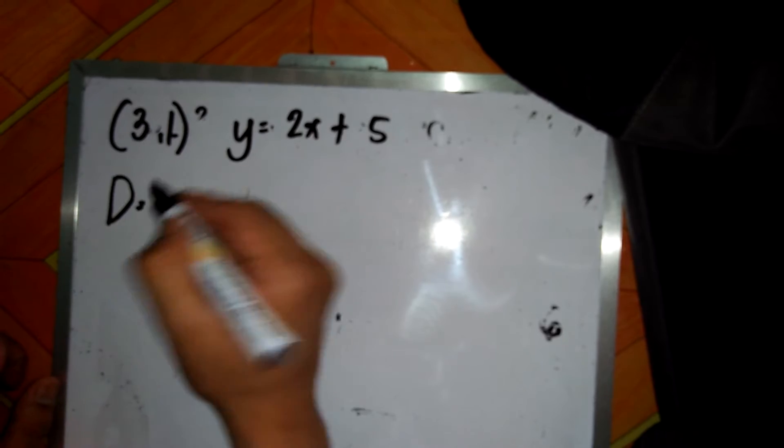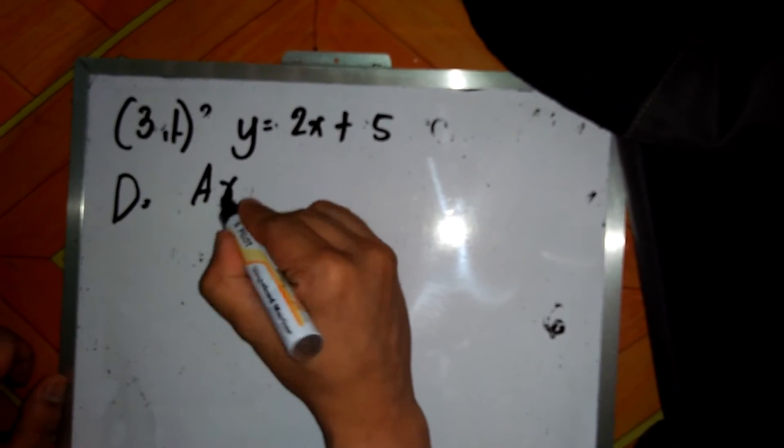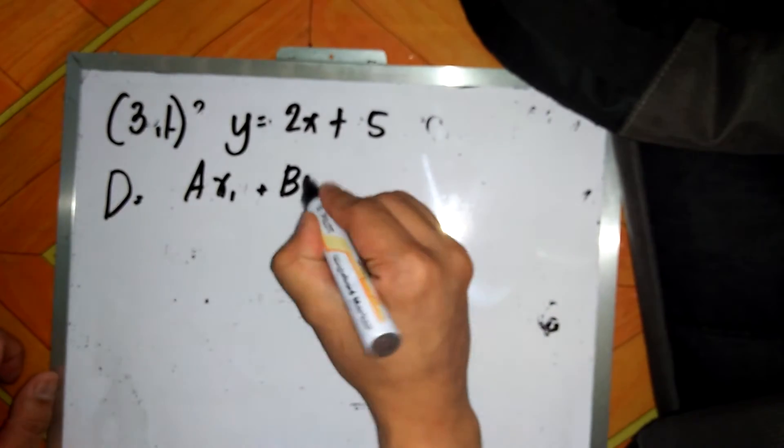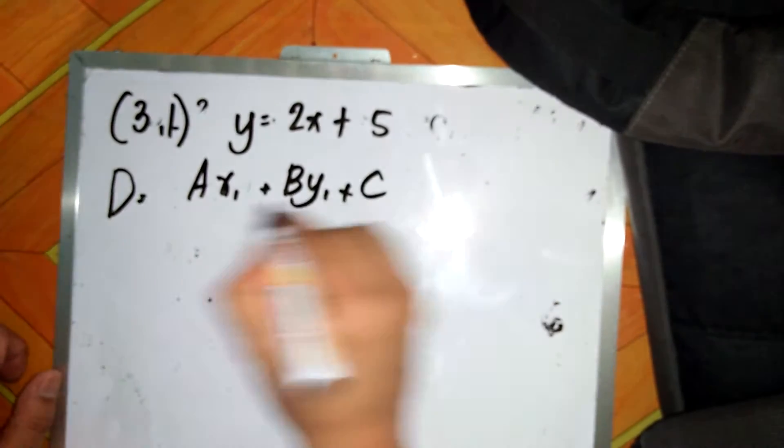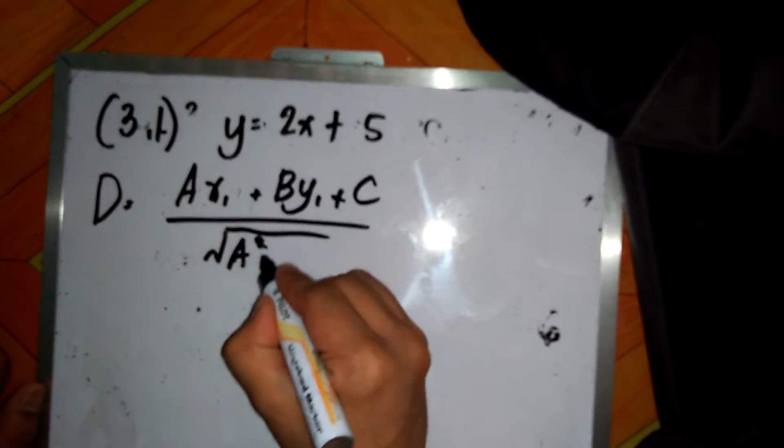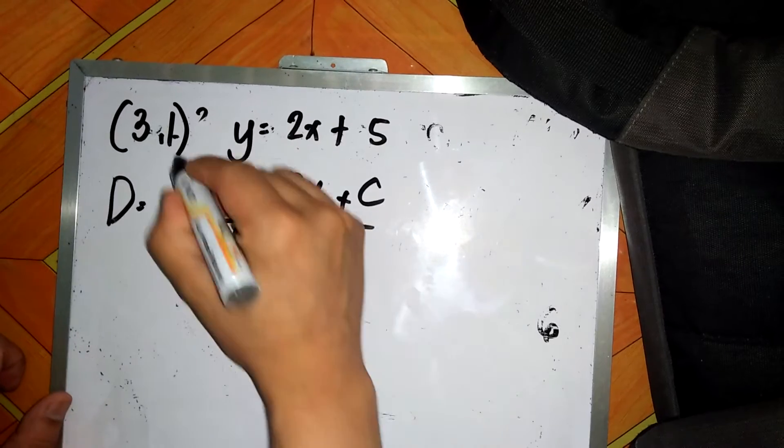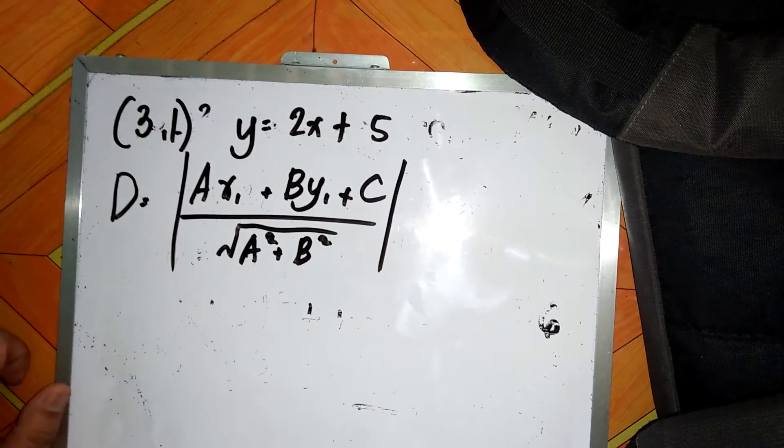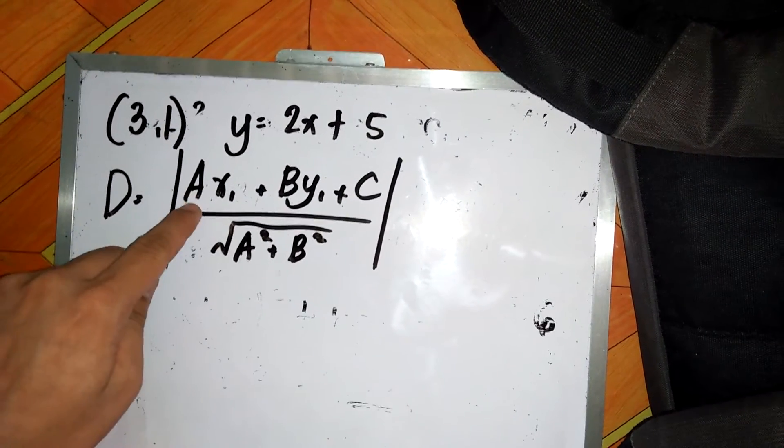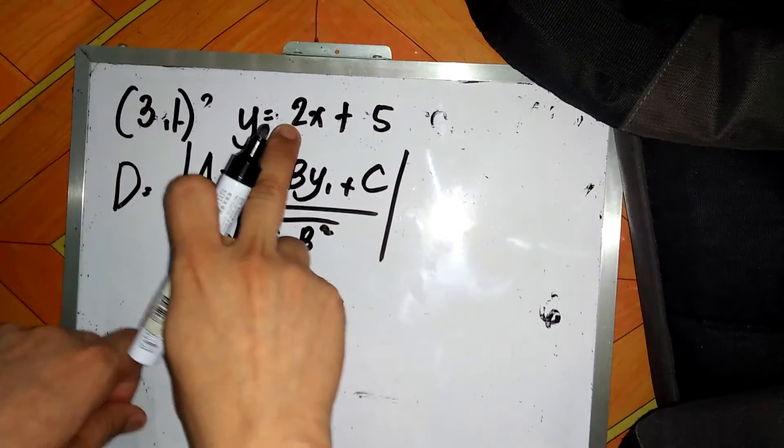So that is distance equals absolute value of ax1 plus by1 plus c all over square root of a squared plus b squared. So that is absolute value since we are getting positive distance here. So the a is the coefficient of the x.